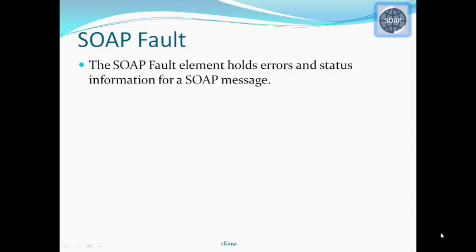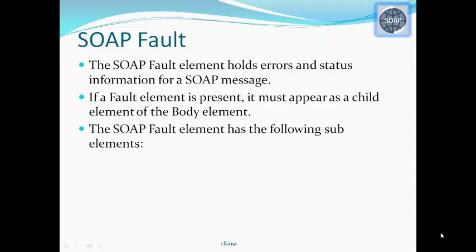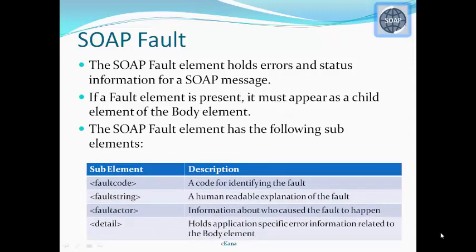The optional SOAP fault element is used to indicate error messages and holds errors and status information for a SOAP message. If a fault element is present, it must appear as a child element of the body element. The SOAP fault element has the following sub-elements: fault code, which is a code for identifying the fault; fault string, a human-readable explanation of the fault; fault actor, which is information about who caused the fault; and detail, which holds application-specific error information related to the body element.